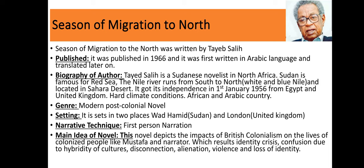If we talk about the genre of this novel, it is a modern post-colonial novel. The setting is in two places: one is Wad Hamid in Sudan and the other is London, United Kingdom. First-person narration has been used as the narrative technique. The main idea of this novel depicts the impact of British colonization on the life of colonized people like the Sudanese, who are inspired by the colonizer's lifestyle and education.